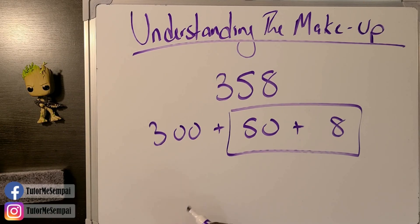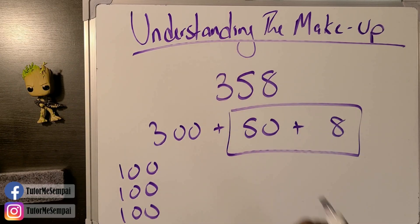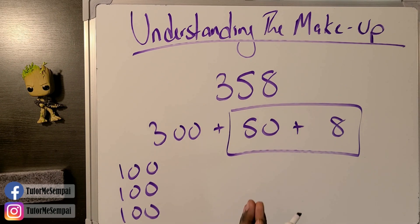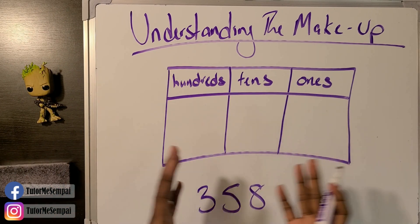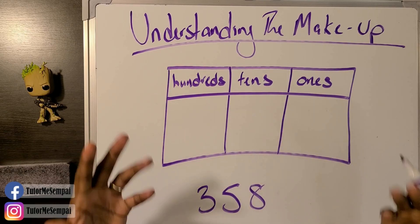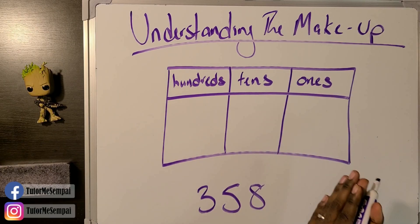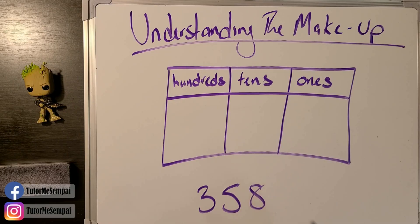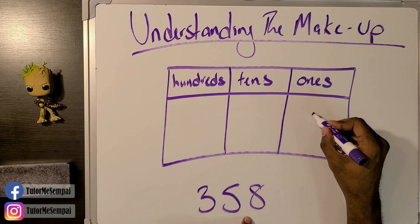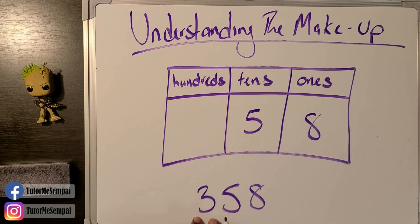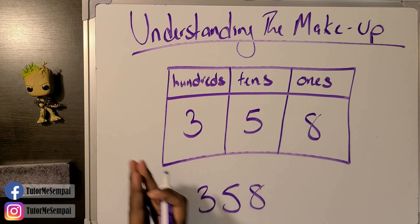How many hundreds can you break 300 into? Three separate hundreds — so the 3 truly does represent three hundreds. Now that we know what each digit in 358 represents, how do we use that in a place value chart? The chart asks: how many ones, tens, and hundreds do you have? We just figured that out: eight ones, five tens, and three hundreds.